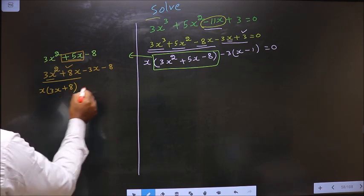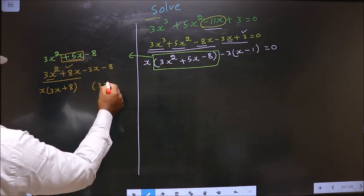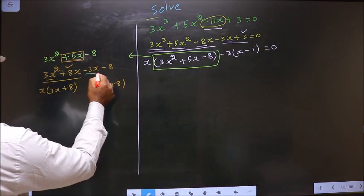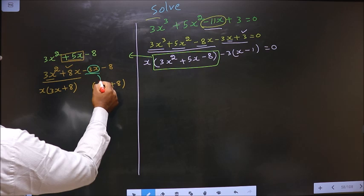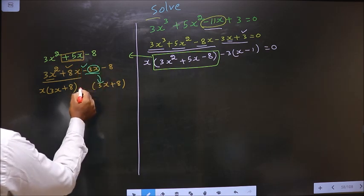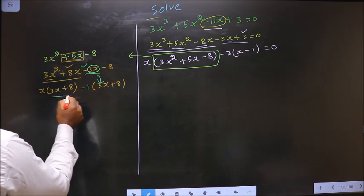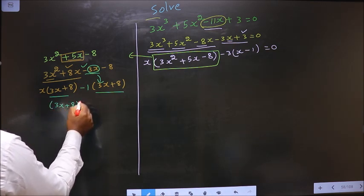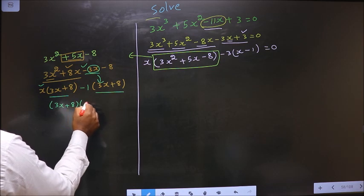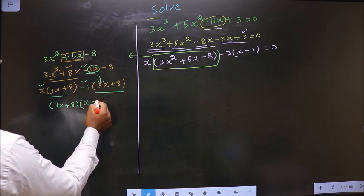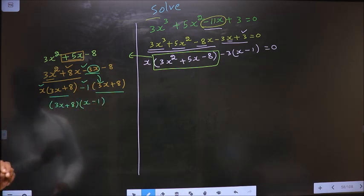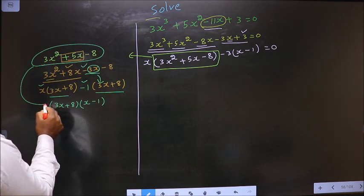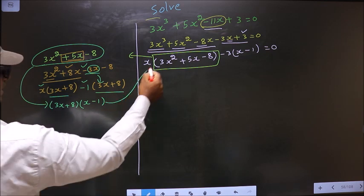Whatever you have got here, here also you should get the same thing. Now from this, 3x has gone inside, so outside you are left with minus 1. Now you take out 3x plus 8 common, so here you have x and here you have minus 1.